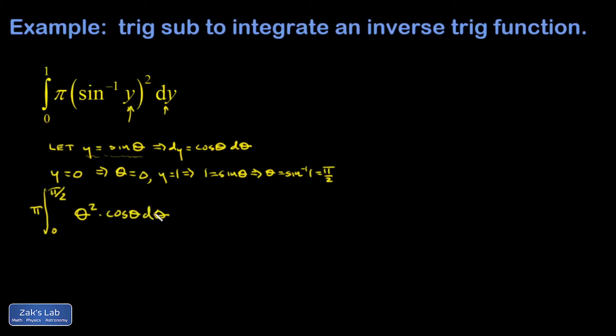Now I recognize this as a classic integration by parts integral. I have a piece that gets simpler if I differentiate it and a piece that's easy to guess the antiderivative of. Let u equal theta squared. Then du is two theta d theta. Let dv equal cosine theta d theta.